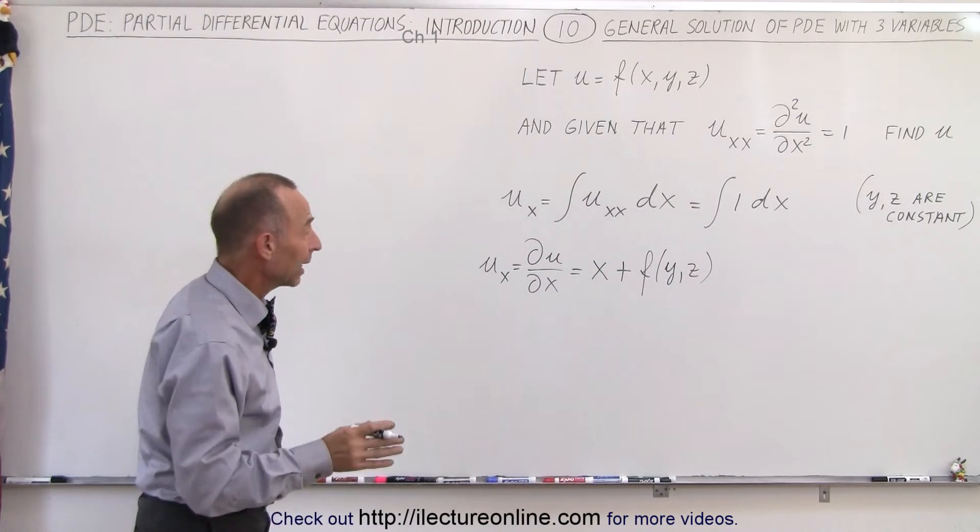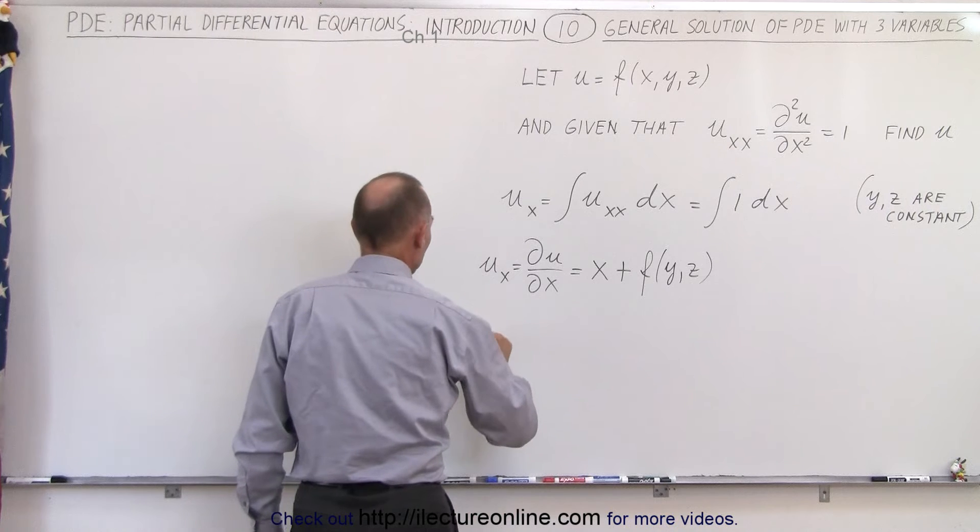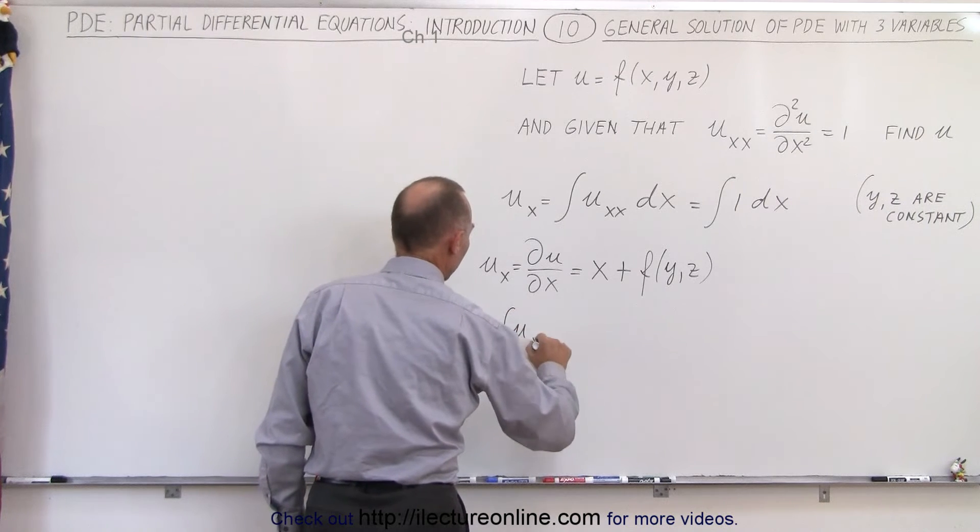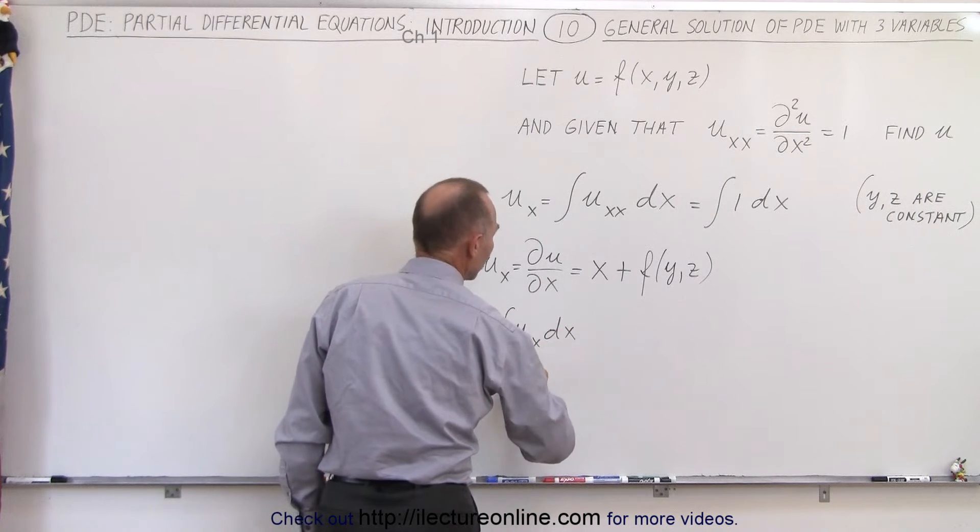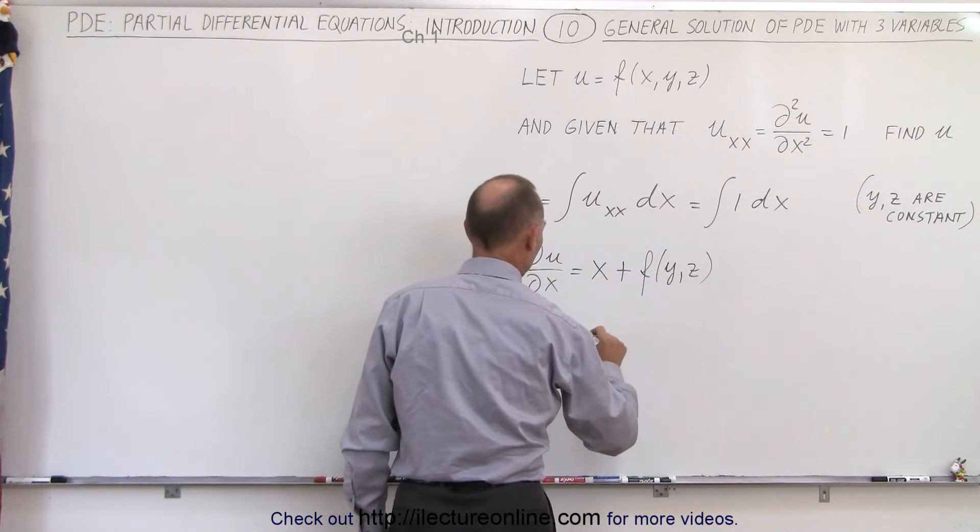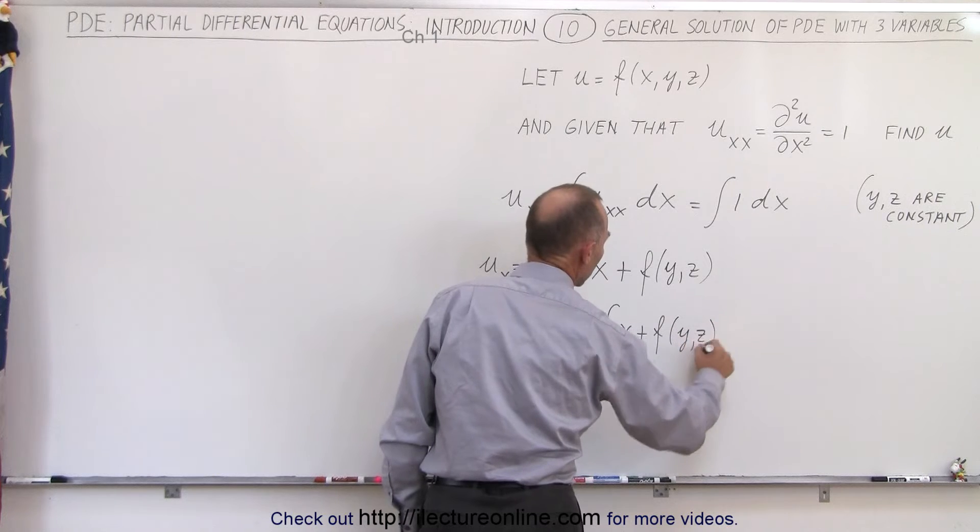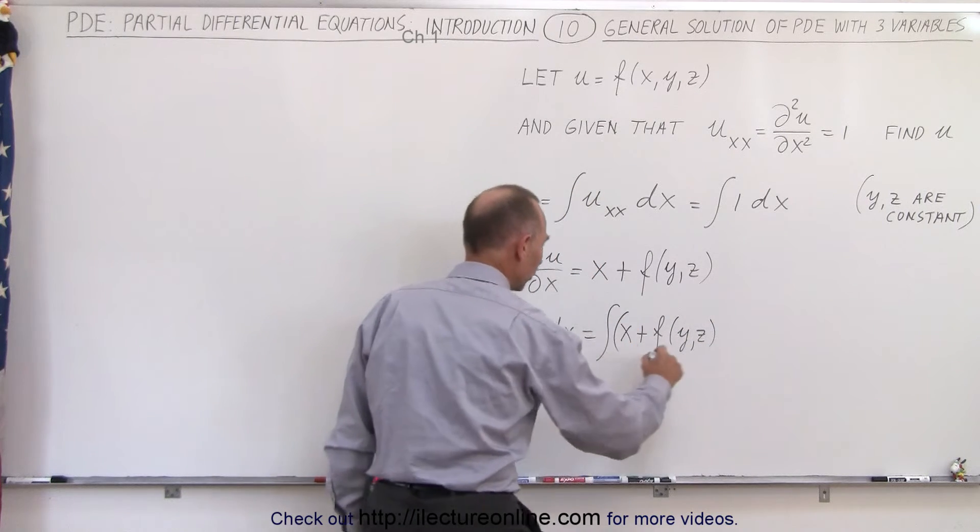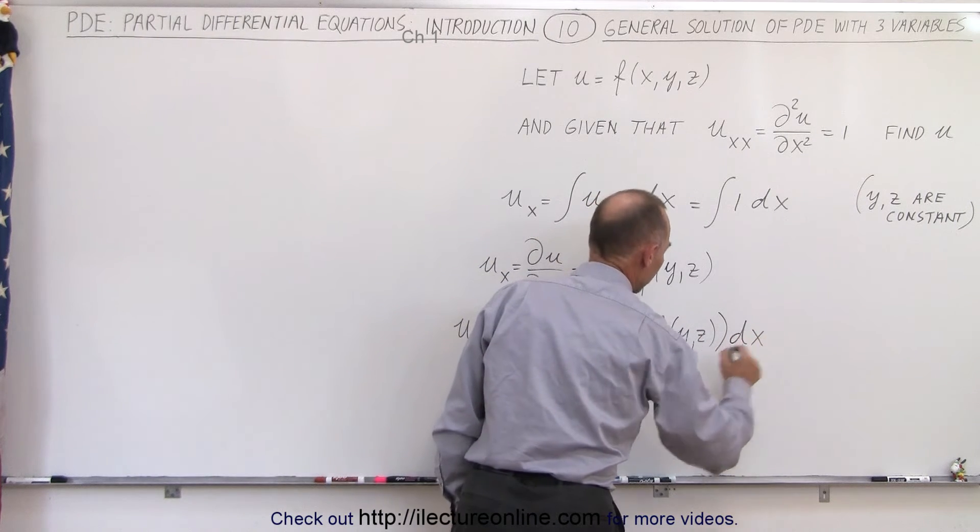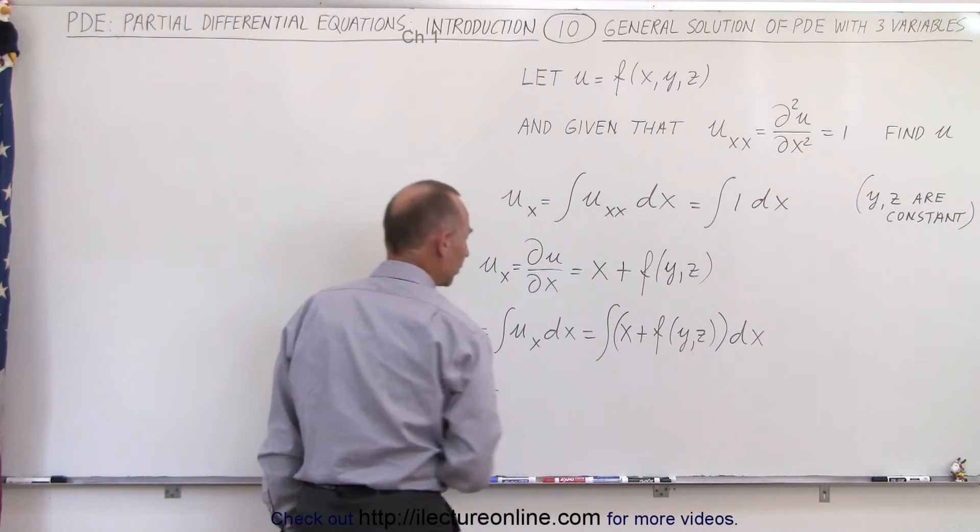Now we're ready to integrate again, because we need to find u, which is equal to the integral of u sub x dx, and u sub x is going to be equal to this, so this is equal to the integral of x plus some function of y and z, and the whole thing times dx.